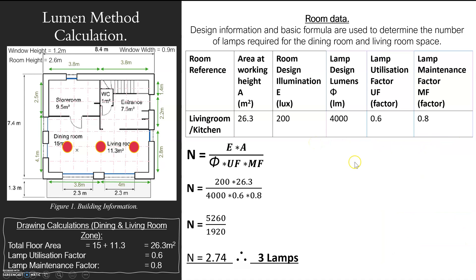Once I've got all that information, I'm just plugging it into the formula. E represents 200, A represents 26.3, my flux is 4000, and UF and MF go in there too. That gives me 2.74. Now that's not whole lamps, so I need to round that up. Always round up because N is the minimum number of lamps needed to satisfy this design's lux values given the lamp information.